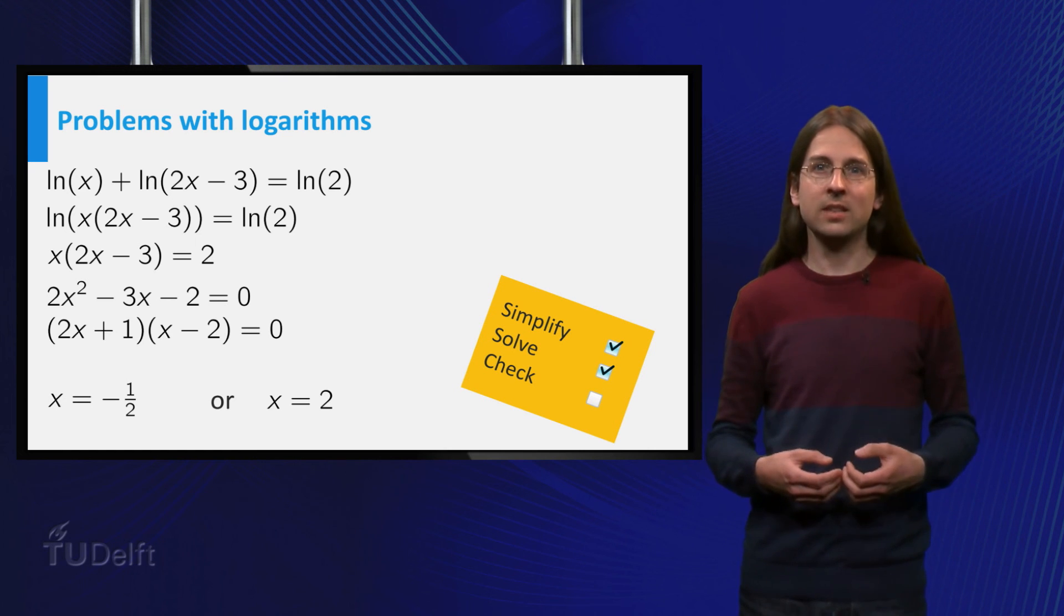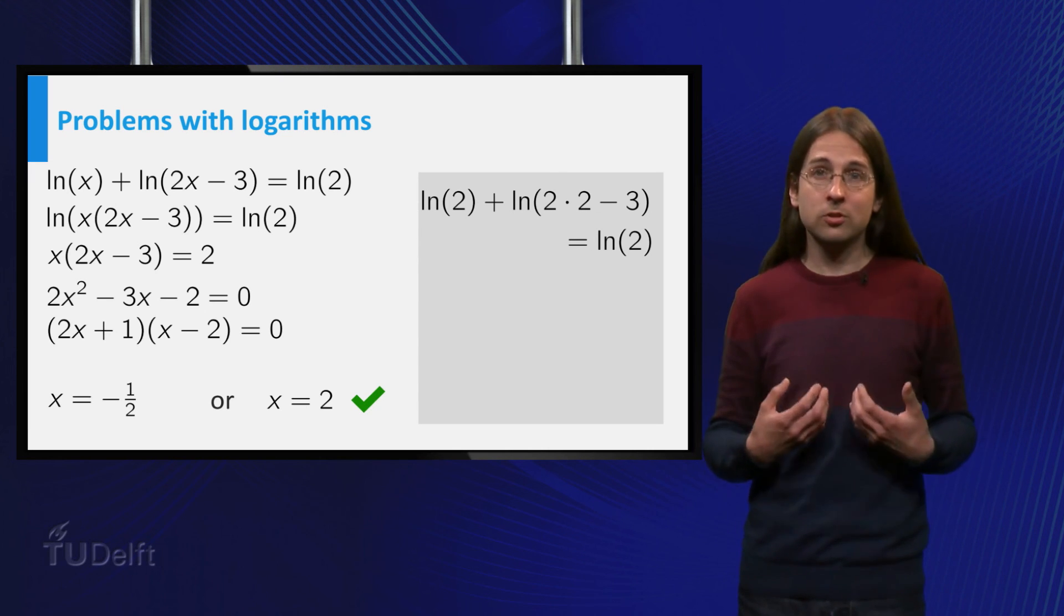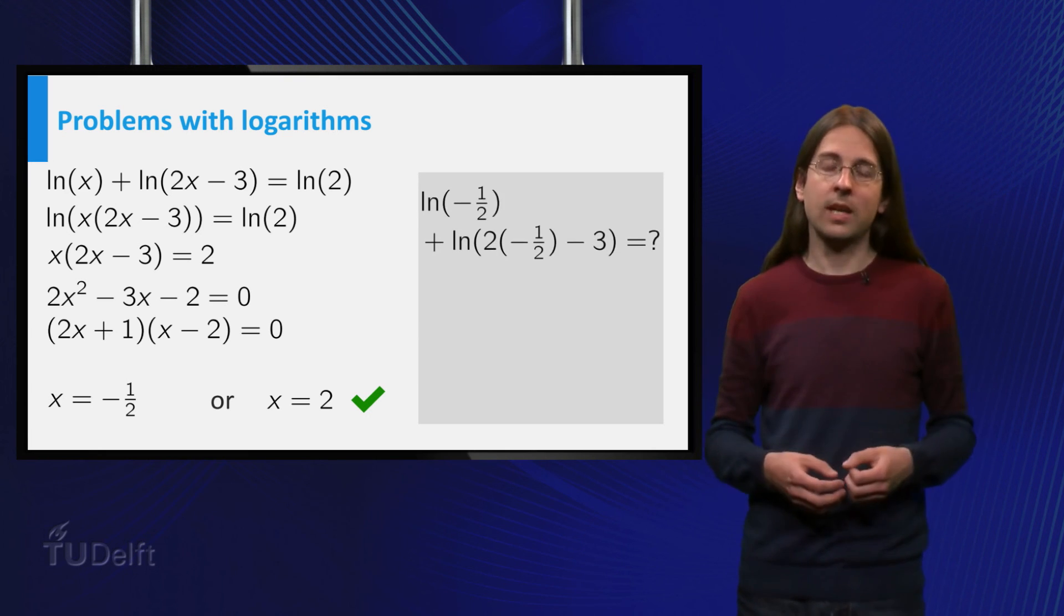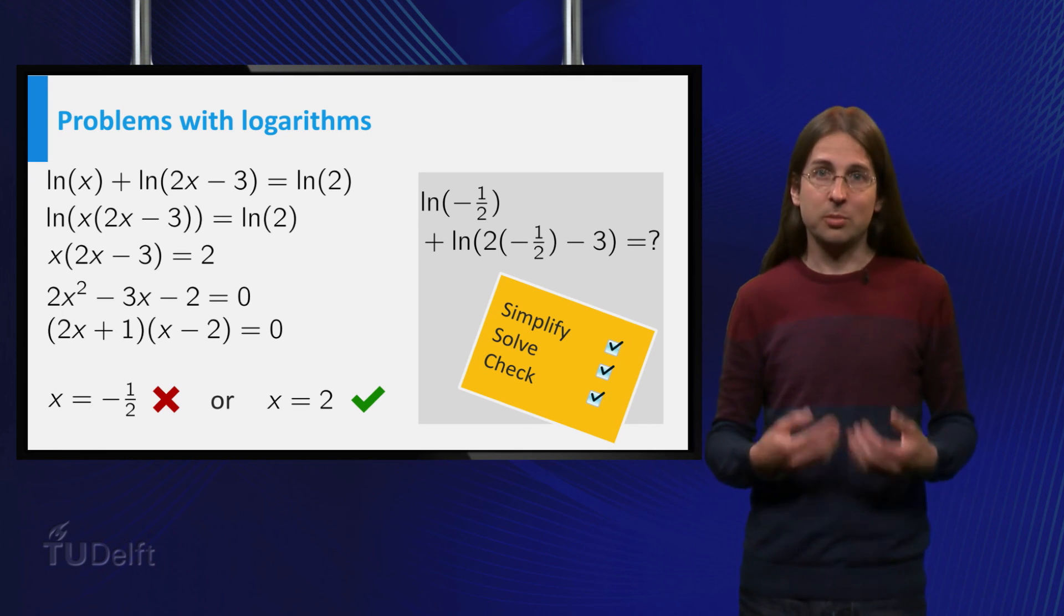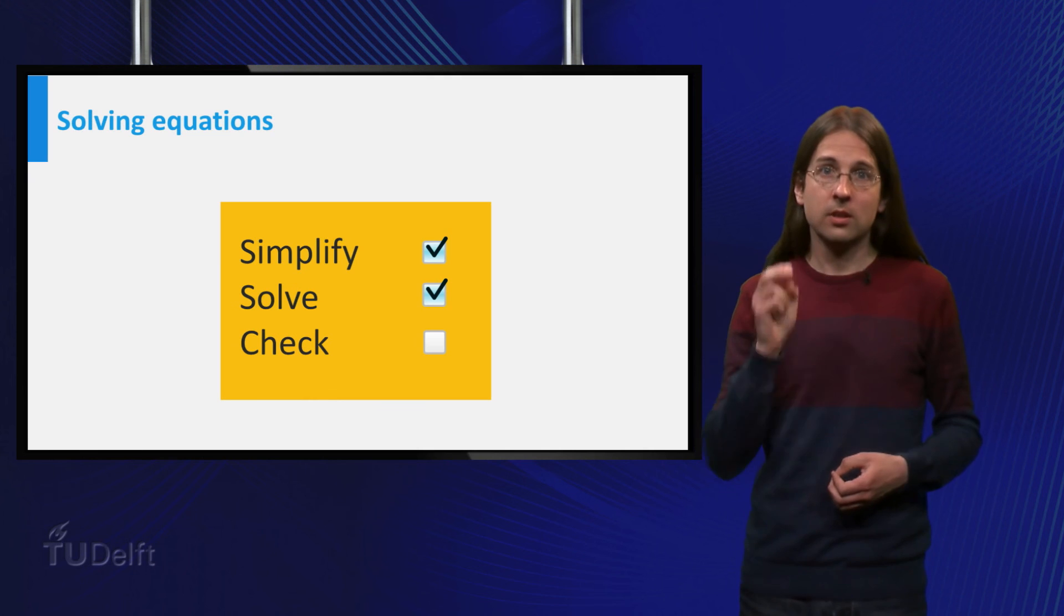The solutions are x = -1/2 and x = 2. Let us plug these into the original equation to check if they are valid. For x = 2 we obtain ln(2) + ln(1) = ln(2), so x = 2 is indeed a valid solution. However, we can't plug x = -1/2 into the equation as both logarithms on the left hand side take on a negative argument. In particular, x = 2 is the only valid solution. Remember to simplify, solve and check.